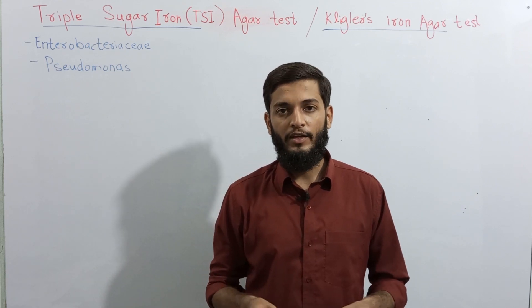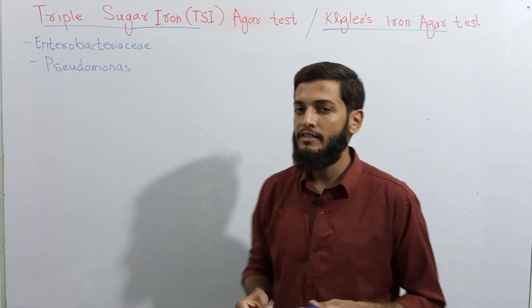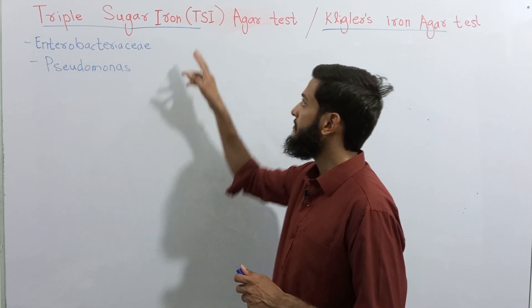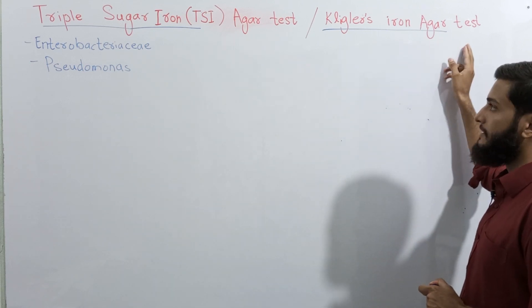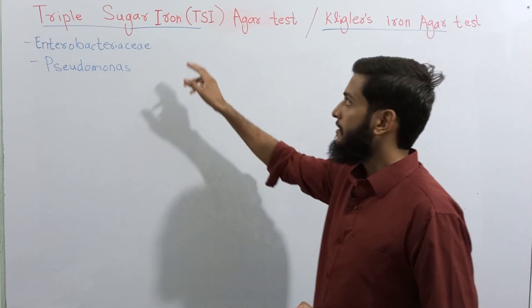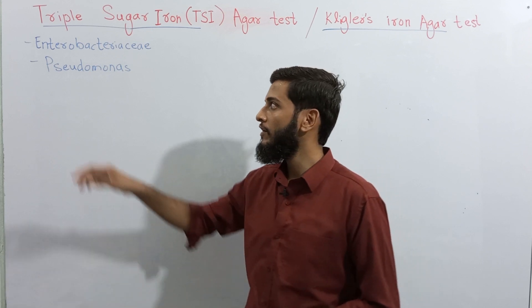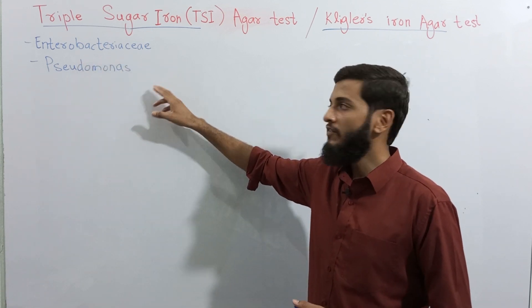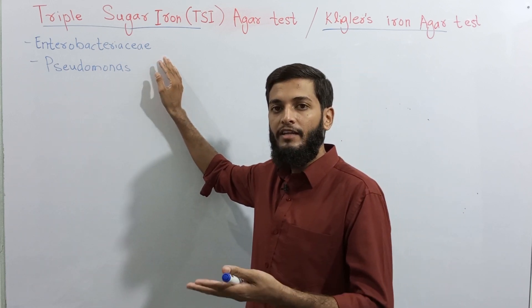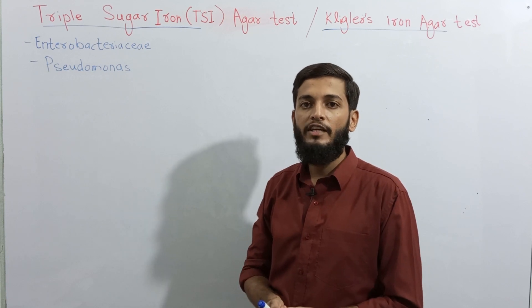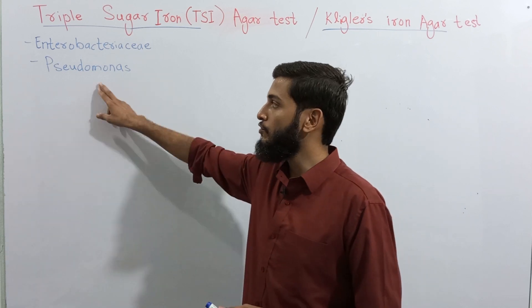Assalamu alaikum, you are watching Microbiology by Numan. In this video we will talk about triple sugar iron agar test, most commonly known as TSI agar test, also called Kligler's iron agar test. This TSI agar test is most commonly used for the identification of family Enterobacteriaceae, which are gram-negative rods, facultative anaerobes, and oxidase negative. This TSI test can also be used for the identification of Pseudomonas.